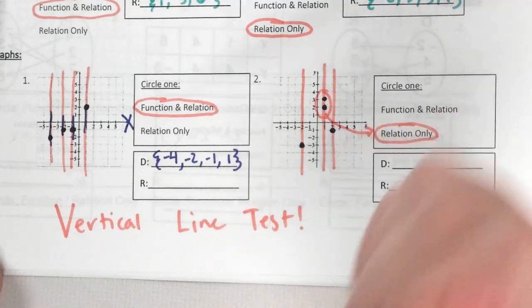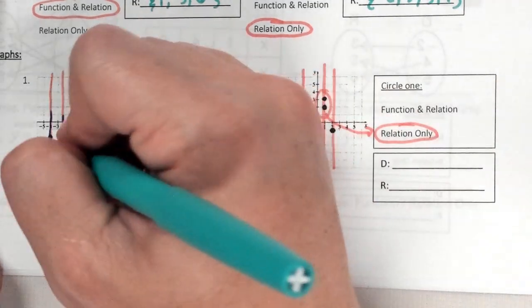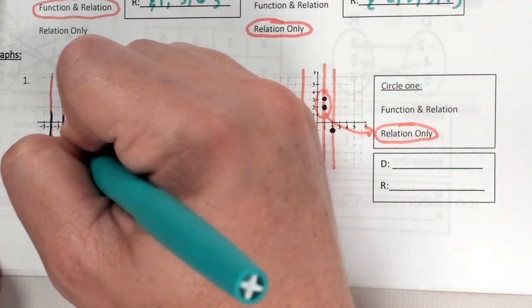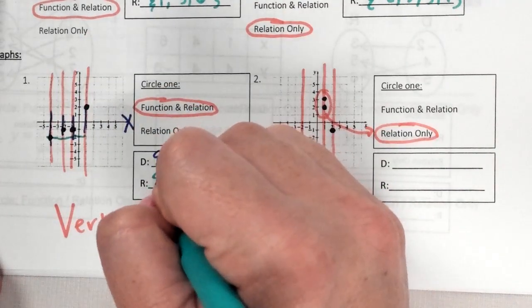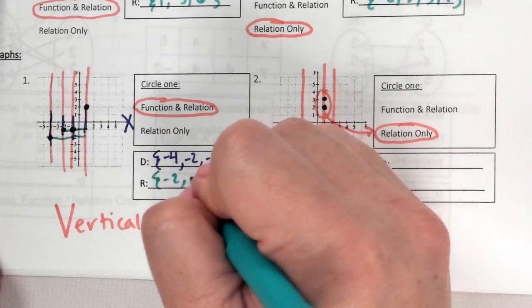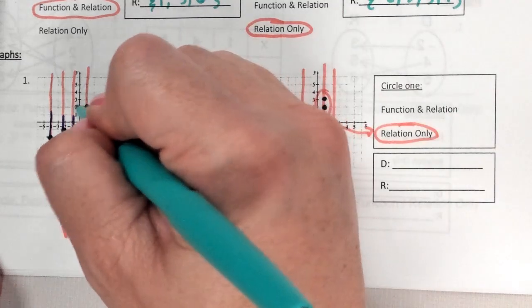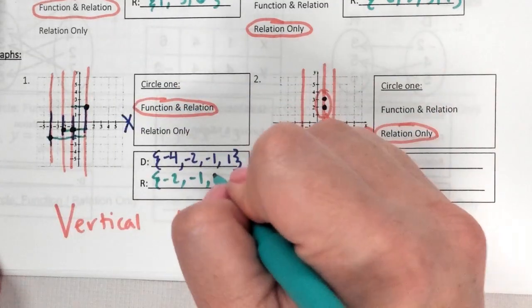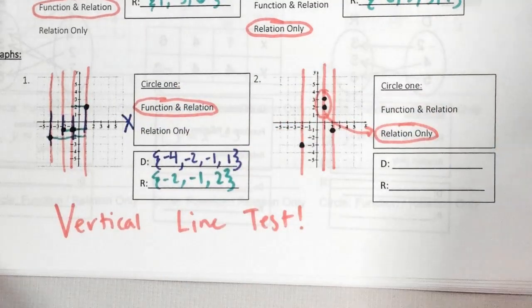Range — start lowest and work your way up. My lowest dot is at a height of negative 2. Both of these are at negative 1 and we don't have to write repeats. And this is at a height of 2. That's how it works on a graph.